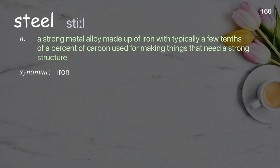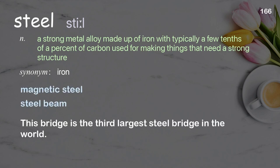Steel: a strong metal alloy made up of iron with typically a few tenths of a percent of carbon, used for making things that need a strong structure. Examples: magnetic steel; steel beam. This bridge is the third largest steel bridge in the world.